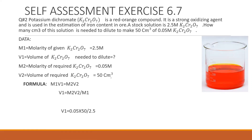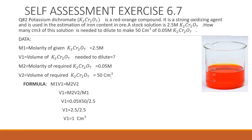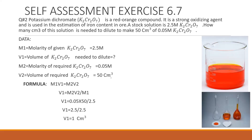Substituting: V1 = (0.05 × 50) / 2.5 = 1 cm³. So 1 cm³ is the required volume of stock solution to prepare 50 cm³ of 0.05 molar potassium dichromate solution. The compound appears as an orange-red color which we have now diluted.